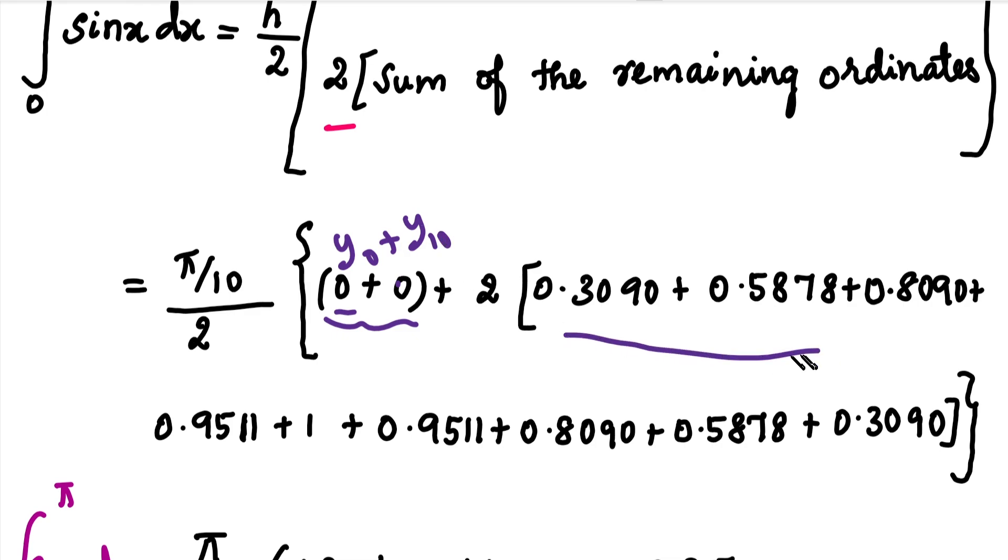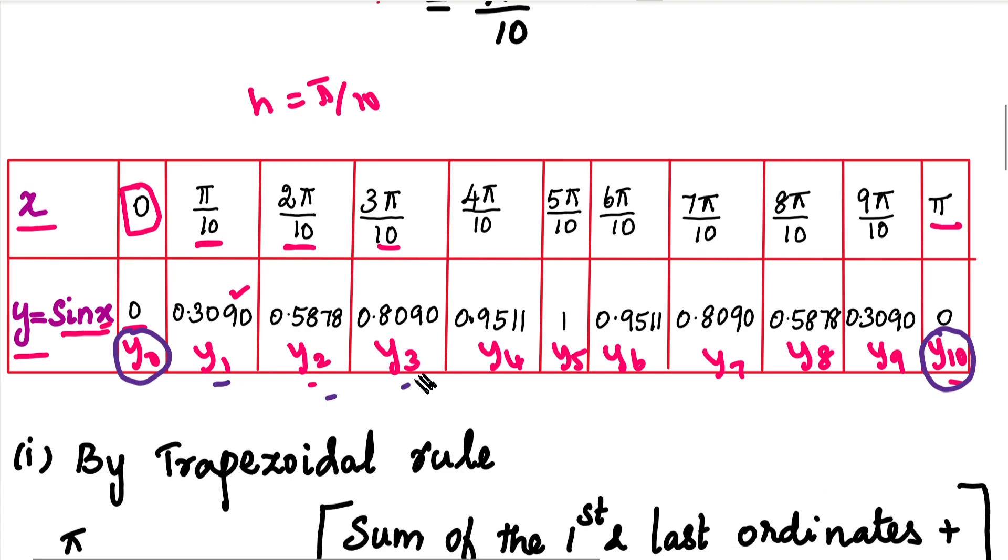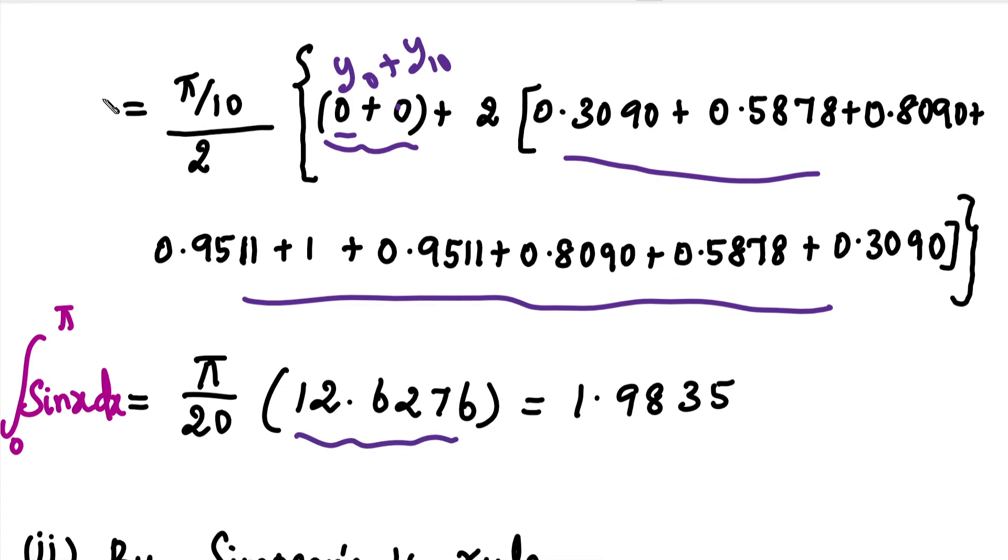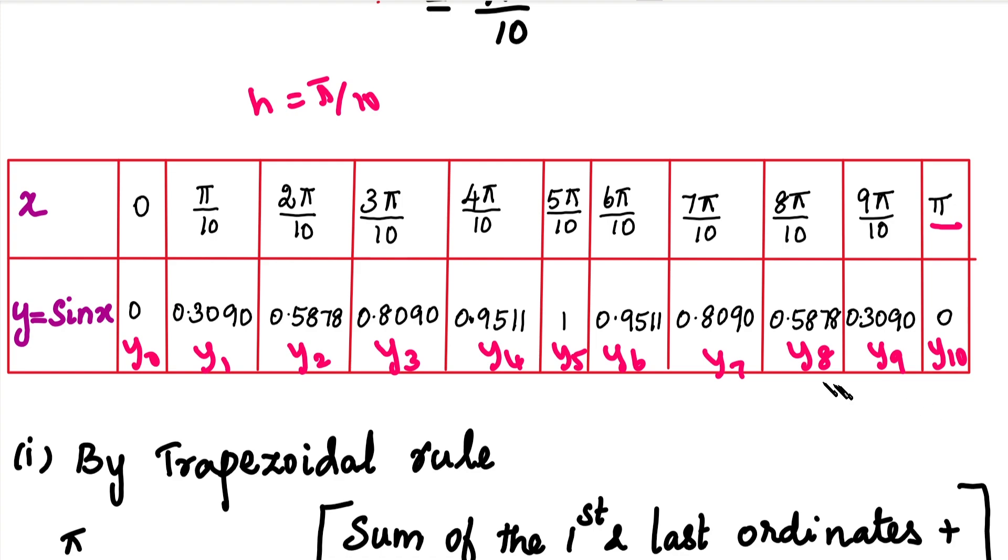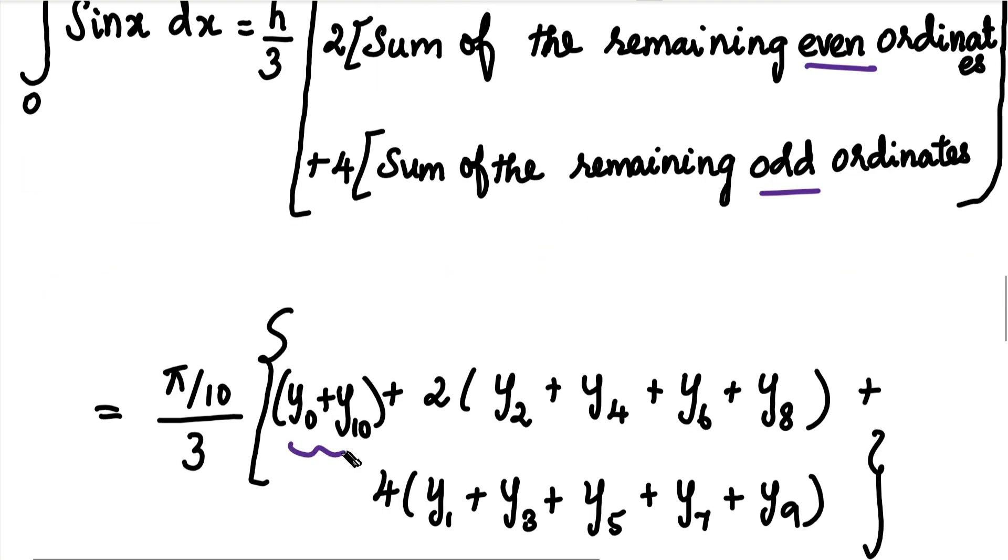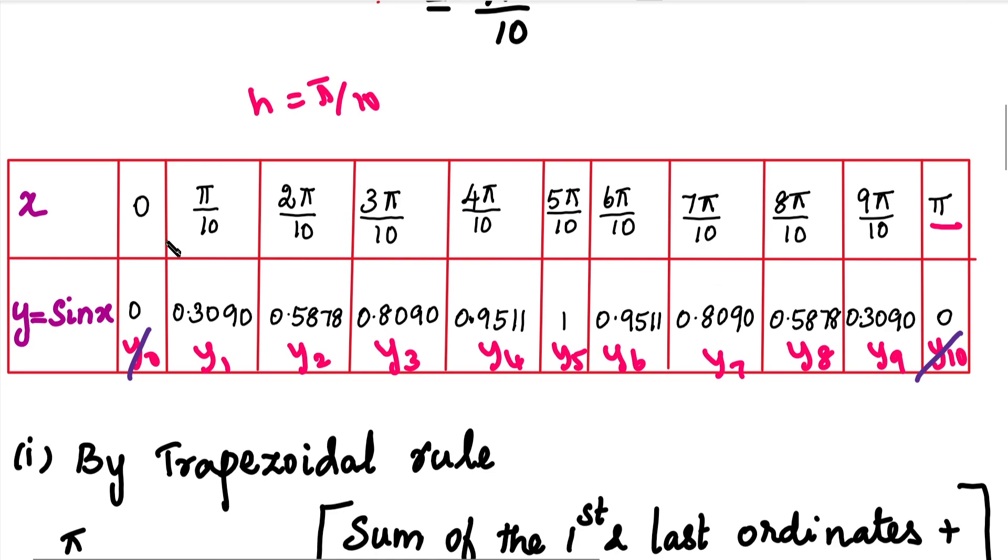In the formula, the first term is y0 plus y10, then plus 2 times the remaining ordinates y1, y2, y3, y4, y5, y6, y7, y8, y9. For Simpson's 1/3 rule: integral equals h/3 times [(y0 + y10) + 2 times sum of even ordinates + 4 times sum of odd ordinates]. The even ordinates are y2, y4, y6, y8 and odd ordinates are y1, y3, y5, y7, y9.